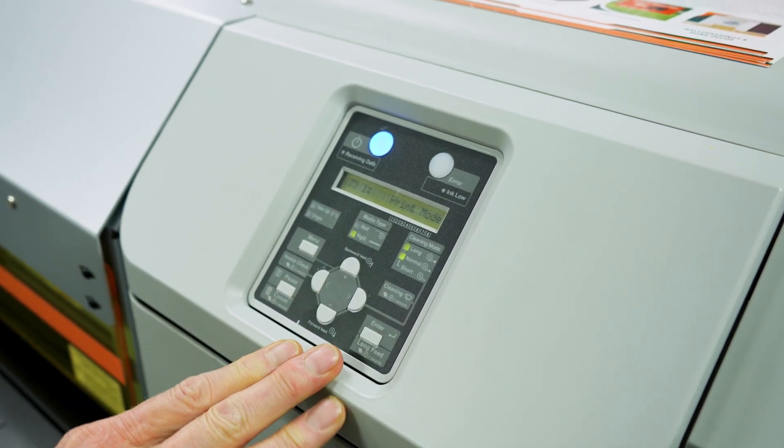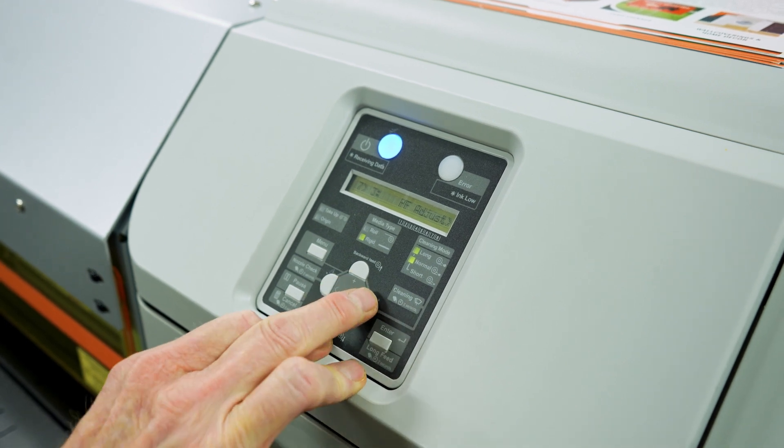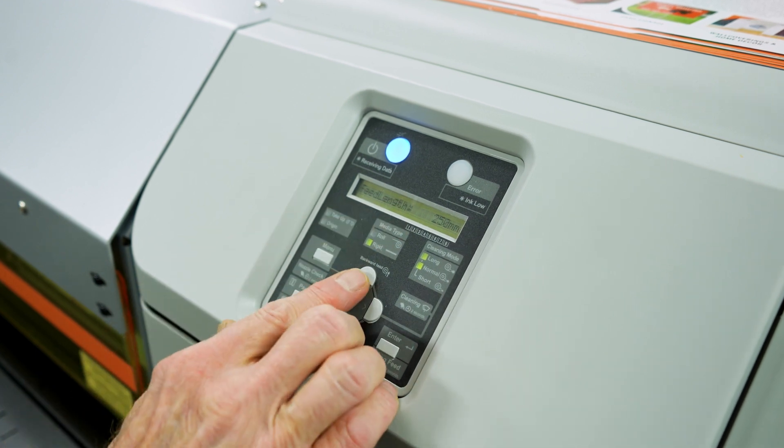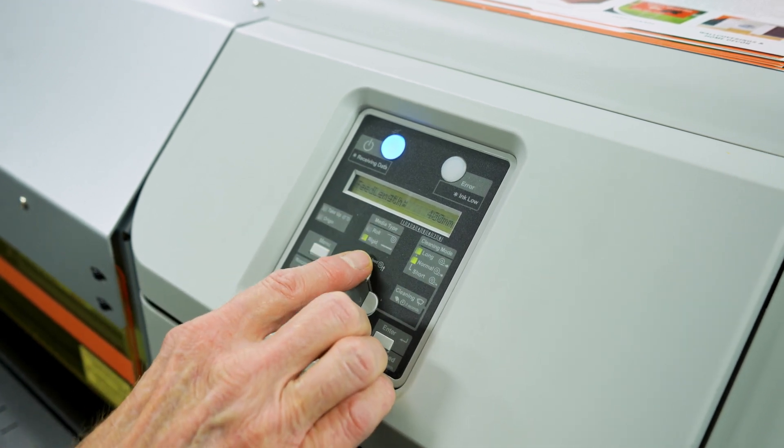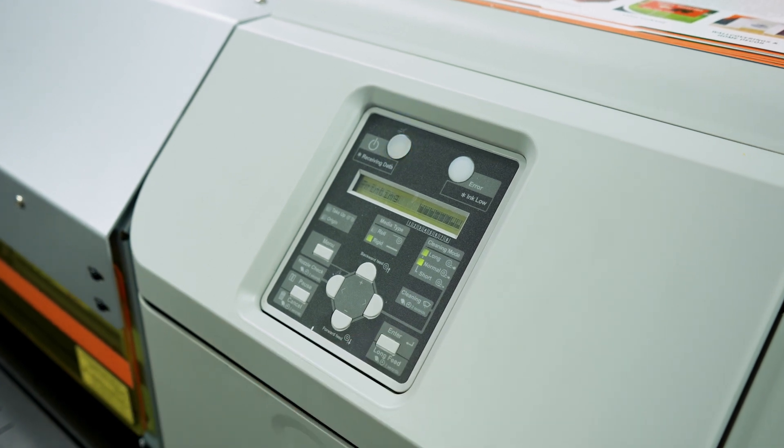Hit enter and navigate to PF adjust. Once there, select initial print. Here you'll adjust the feed length to 500 millimeters. The printer will then produce an adjust print at what it believes is 500 millimeters.